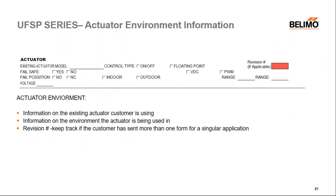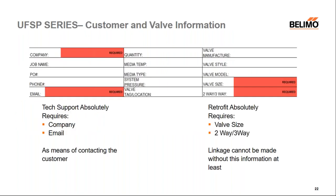The next section is the actuator environment information, where the customer fills in details about the existing actuator and the environment it operates in. There is also a red revision number box to help track multiple revisions of a single form. Underneath that is customer and valve information — as much as possible should be filled in. Required fields include customer name, email for tech support contact, valve size, and two-way or three-way — all absolutely required for retrofit to build a linkage.